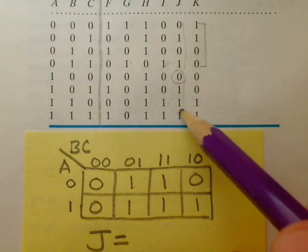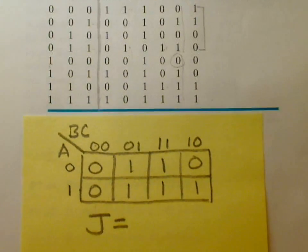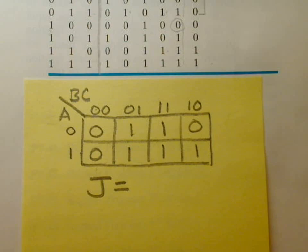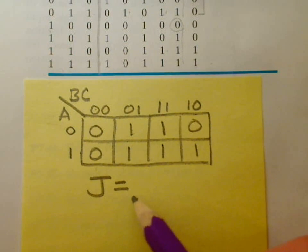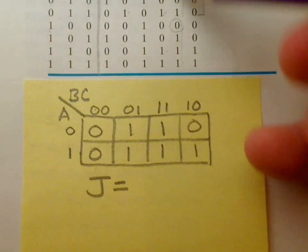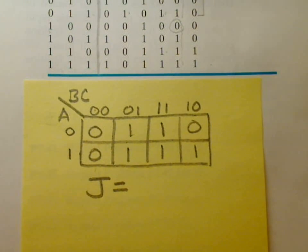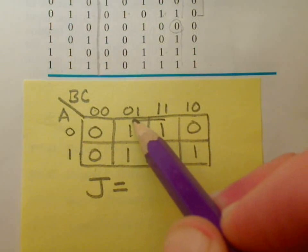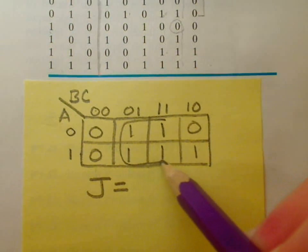So those eight can be mapped into this two by four Karnaugh map. Then, in order to figure out the simplest logic expression, and therefore the smallest circuit for this particular truth table, what you can do is circle the largest number of groups of one you can.